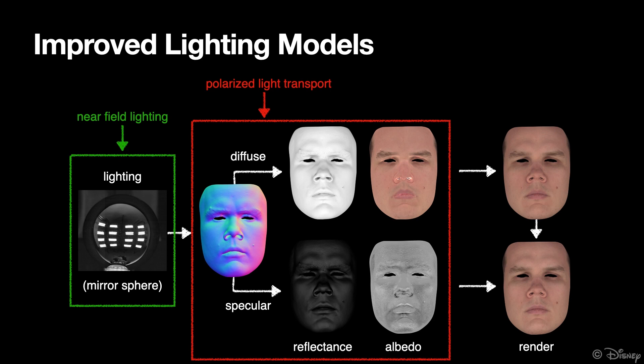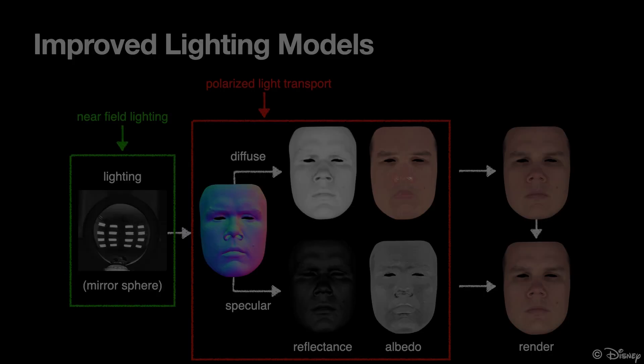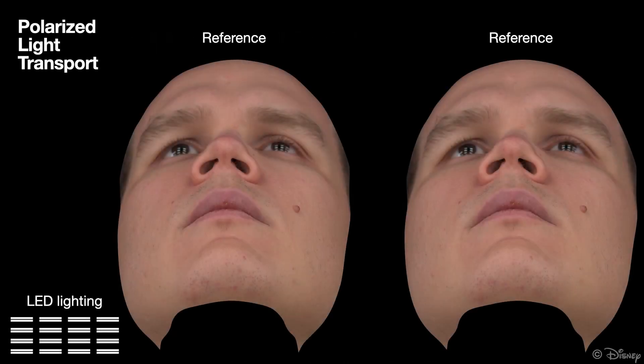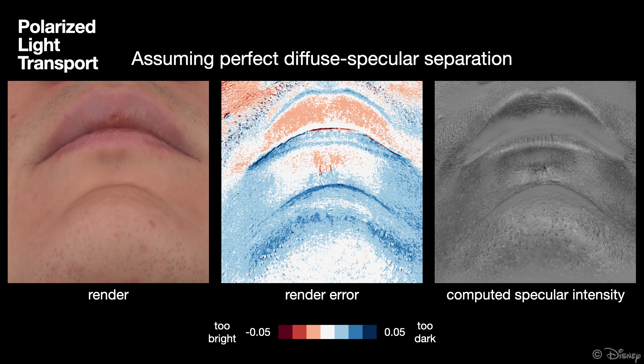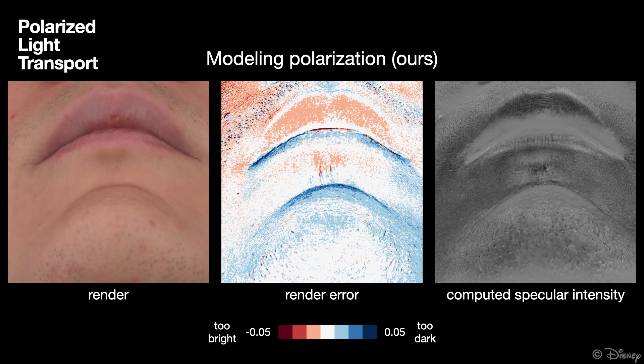We now move on to revise the second simplification found in state-of-the-art methods that capture the face under polarized light, without explicitly modeling polarized light transport. We first compare against the inverse rendering results of the baseline method, which estimates the appearance maps using constant, smooth lighting with all of the LED bars turned on. Although the renders look similar, we again see improvements in rendering error, especially for our camera viewpoints located below the LED bars, for which cross-polarization is less effective. On the right, we also see that the computed specular albedo map looks more homogeneous, with fewer artifacts.